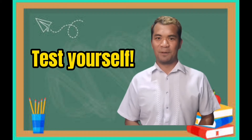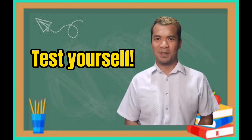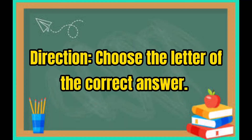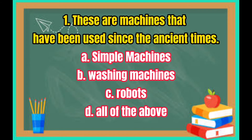Let us now check if you really learned something from the video. Are you ready? Direction: Choose the letter of the correct answer. Number 1: These are machines that have been used since the ancient times. A. Simple machines. B. Washing machines. C. Robots. Or D. All of the above.